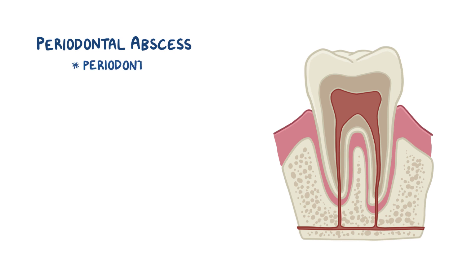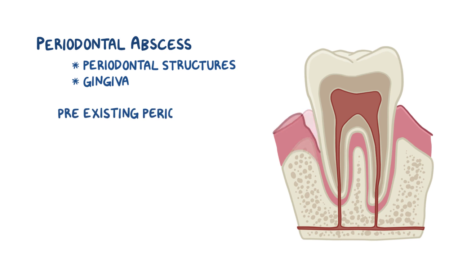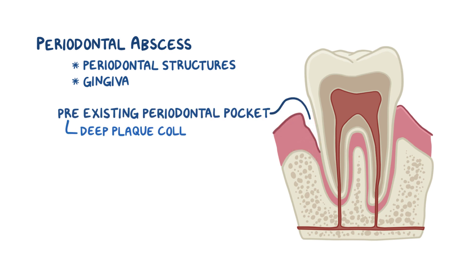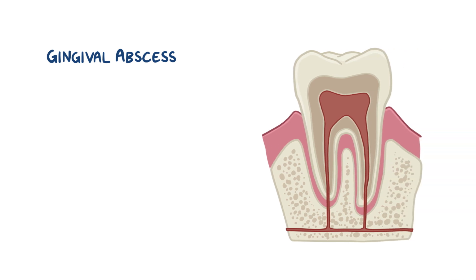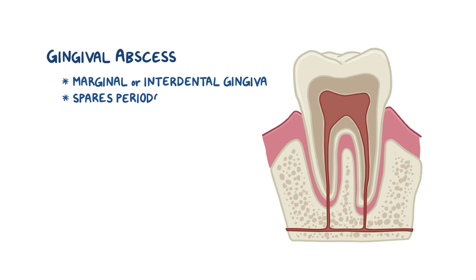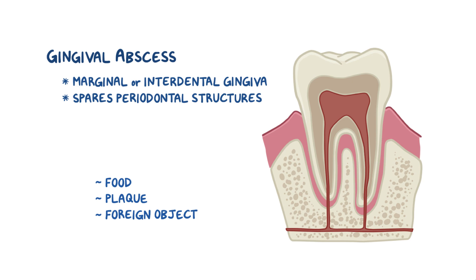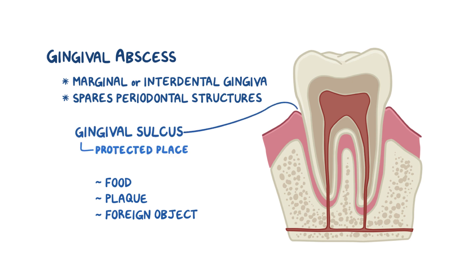Another type of dental abscess is a periodontal abscess, which involves both the periodontal structures and the gingiva. It typically occurs when there's a pre-existing periodontal pocket, perhaps from deep plaque collection or a medical procedure, allowing bacteria to multiply and form an abscess. There's also the gingival abscess, where the abscess only involves the marginal or interdental gingiva while sparing the periodontal structures — usually caused by food, plaque, or a foreign object trapped in the gingival sulcus.